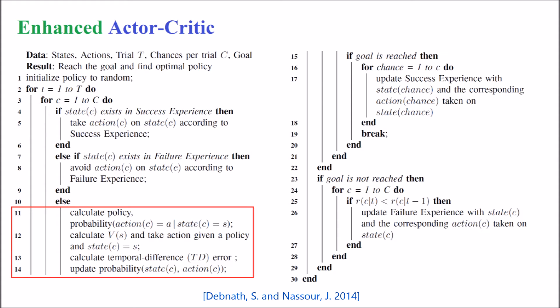In the exploration phase, an agent explores the states and the actions that can be taken on those states by following the four steps of actor-critic method. At each chance during a trial, the agent verifies if it has reached the goal or not. On reaching the goal, the agent adds all the states and actions taken in that trial into the success experience.